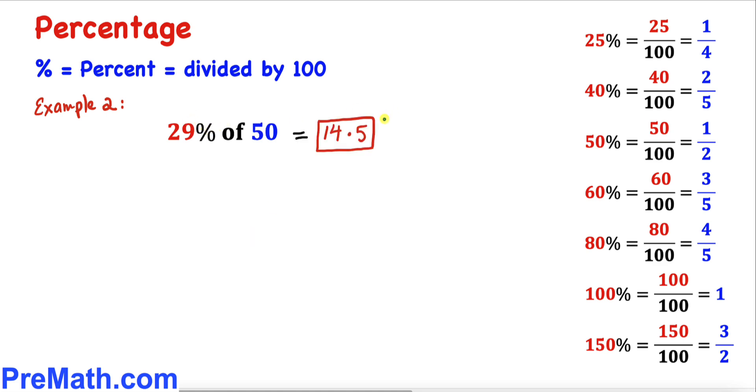That is going to equal 14.5, so therefore 29 percent of 50 is going to be 14.5.